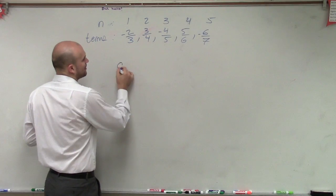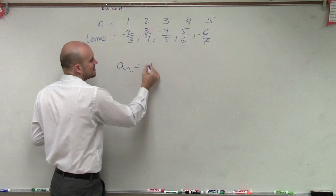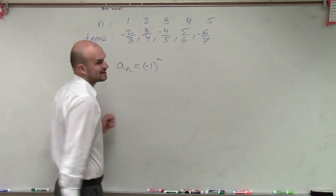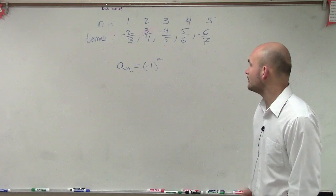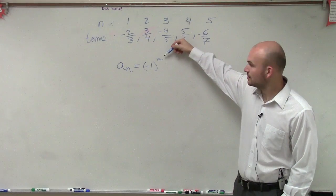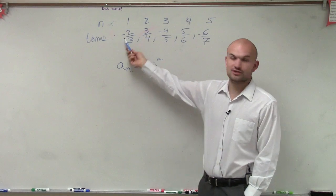So automatically, when I want to find the rule for a sub n, since I have alternating signs, I know the first rule for alternating signs was we had negative 1 raised to the n. Because now we know if I put 1 in for there, I'm going to have negative 1 raised to the first power, which is now going to make the first term negative.